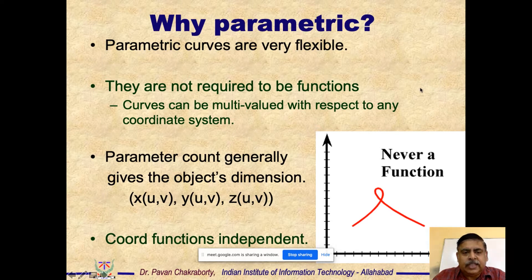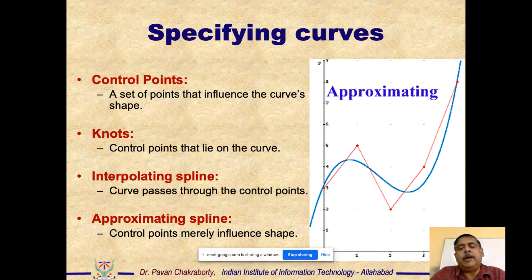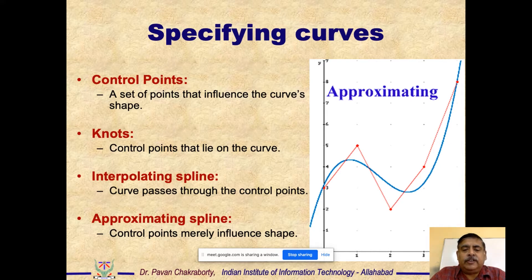Another advantage of parametric form is that a curve could self-intersect or make a loop and come back, which is not possible in implicit or explicit formats. Parametric equations can represent these kinds of curves with kinks. We will mostly be dealing with parametric equations because we favor them. Before developing the parametric spline equation, let us see some definitions for specifying curves.